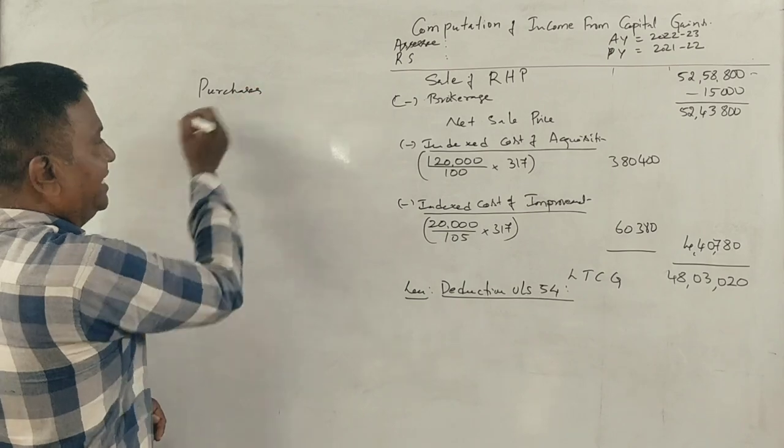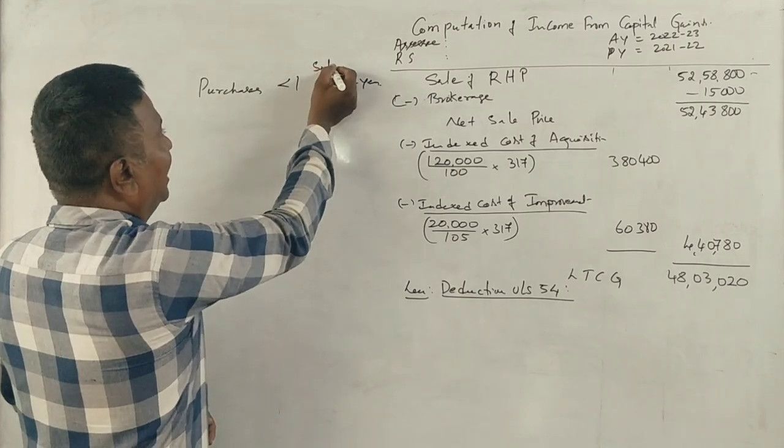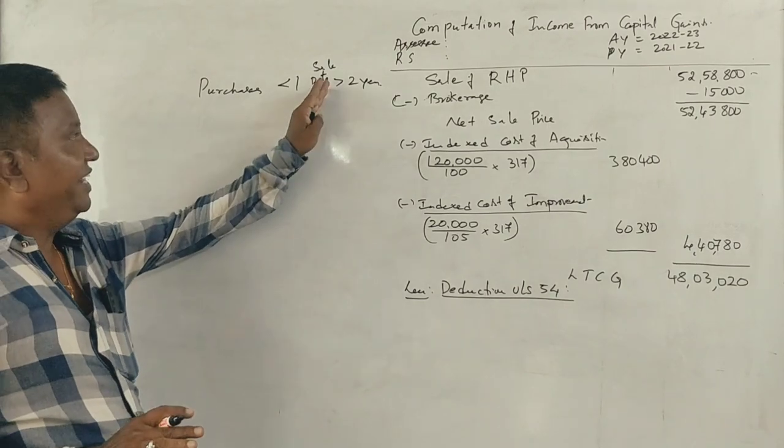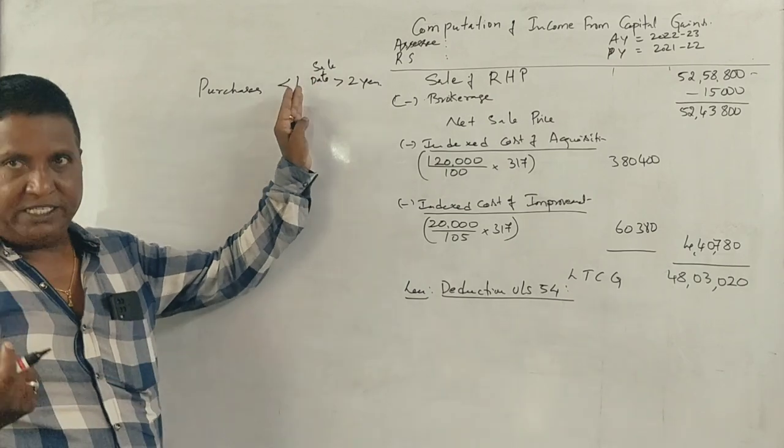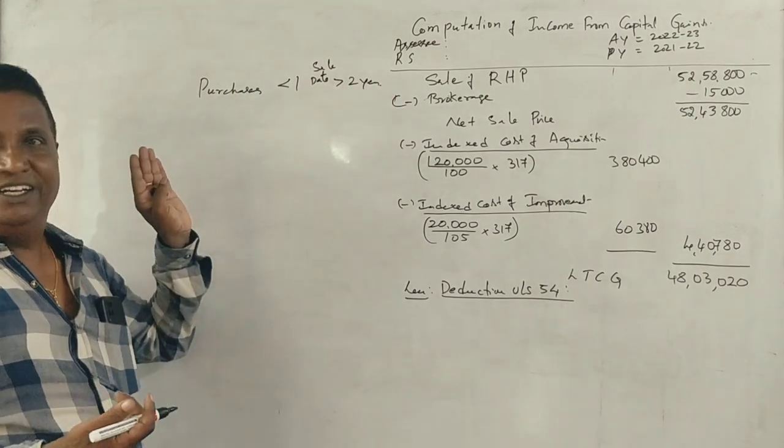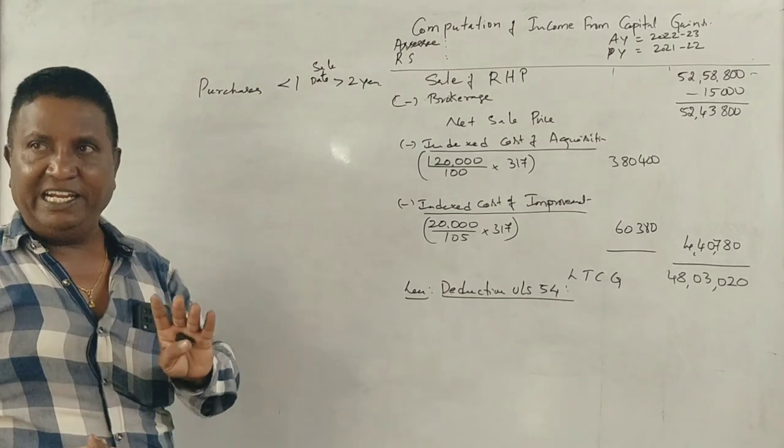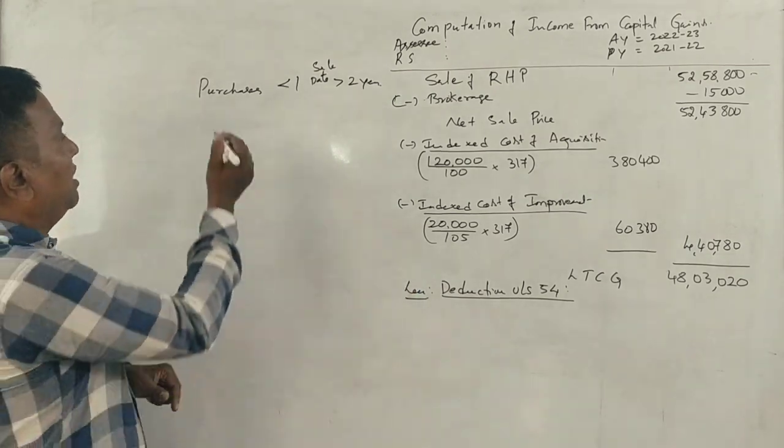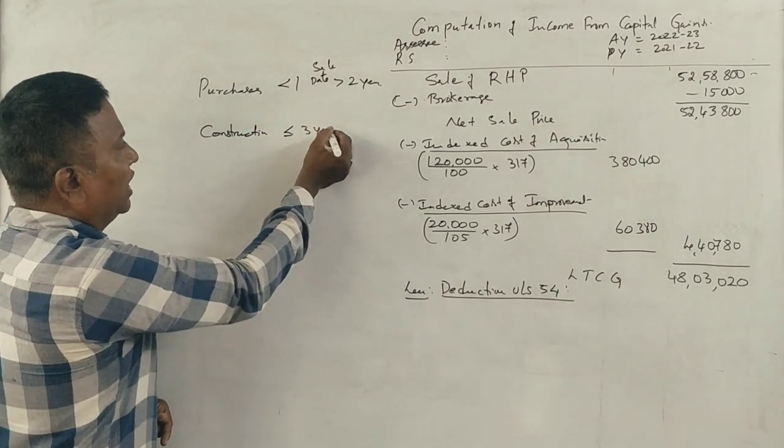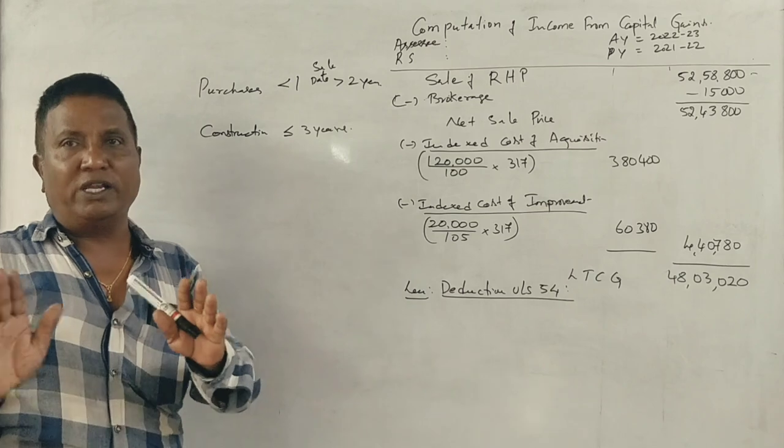If you purchase, it should be done 1 year before the date of sale or within 2 years from the date of sale. If you're going for construction, the construction should be completed within 3 years from the date of sale.